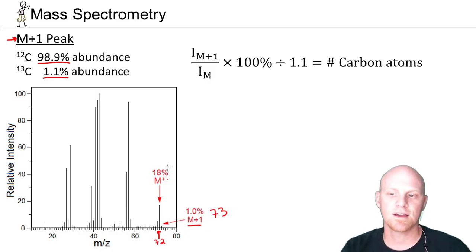And so there's a quick formula. If you know the relative intensities, like we've given here, 18% for the molecular ion, 1% for the M+1 peak.